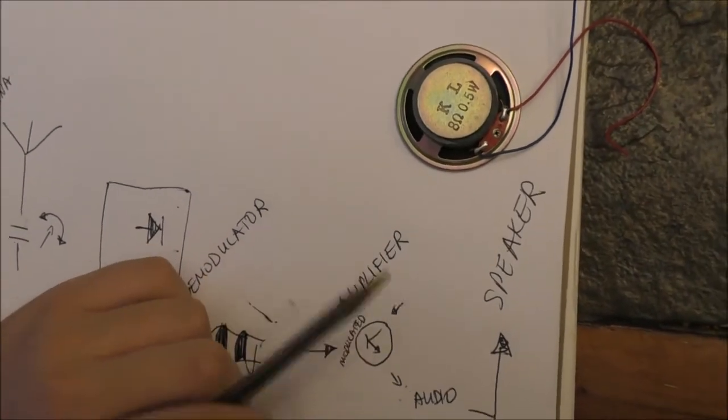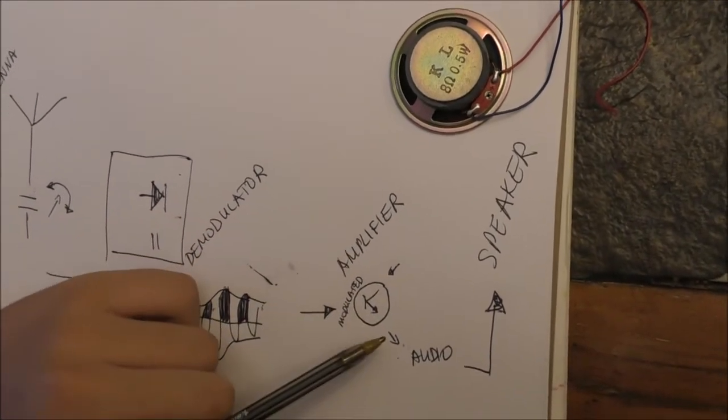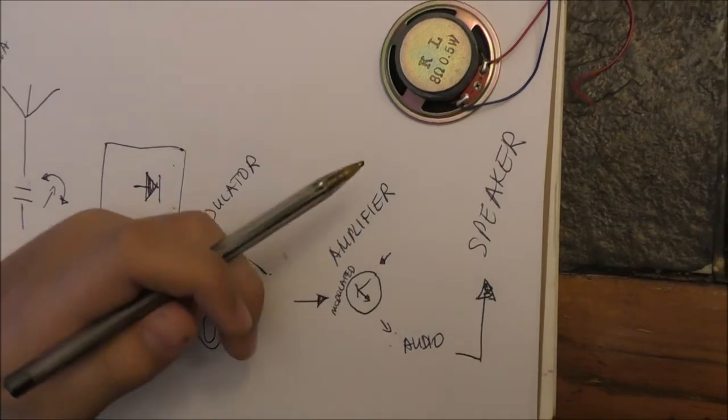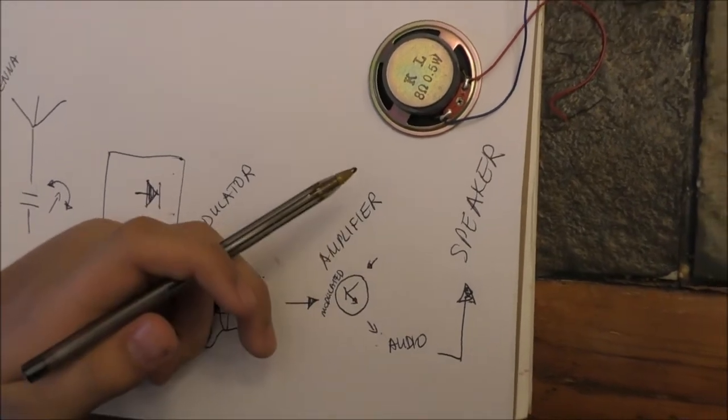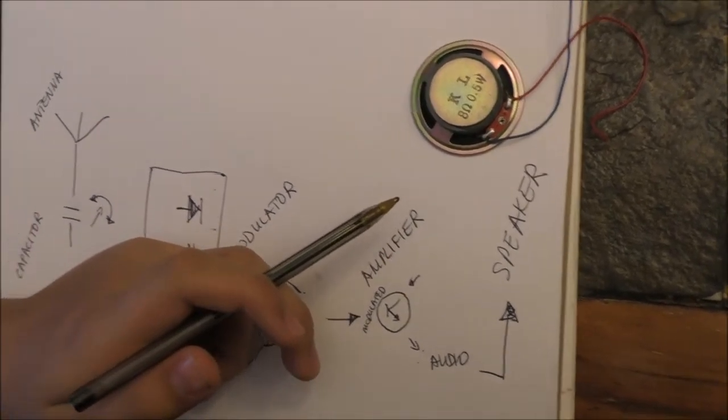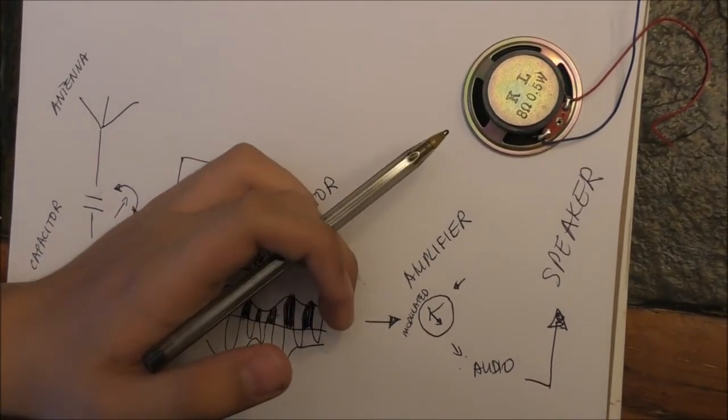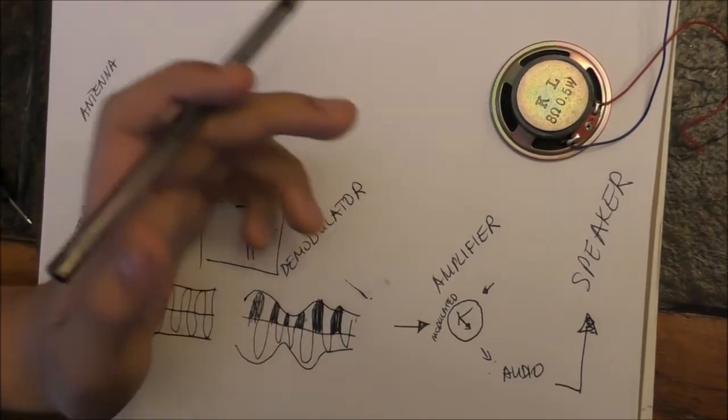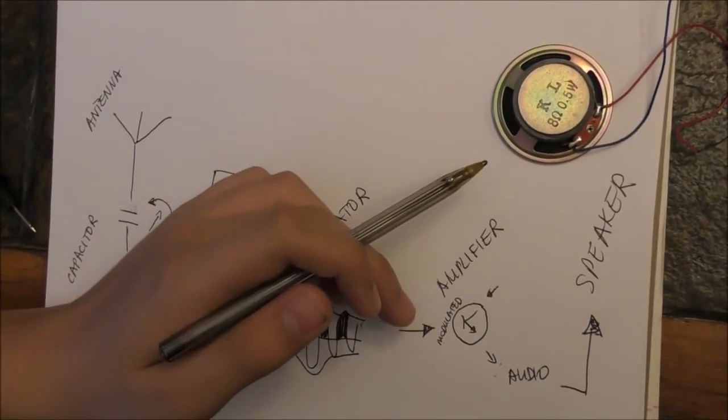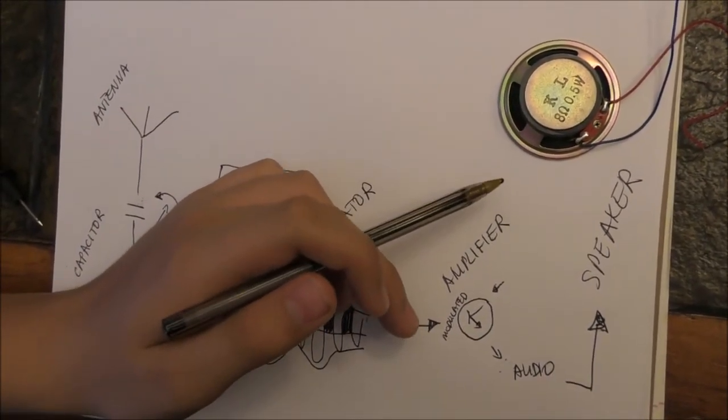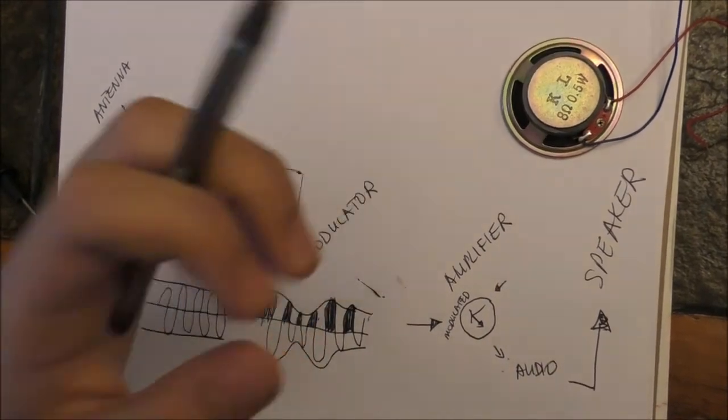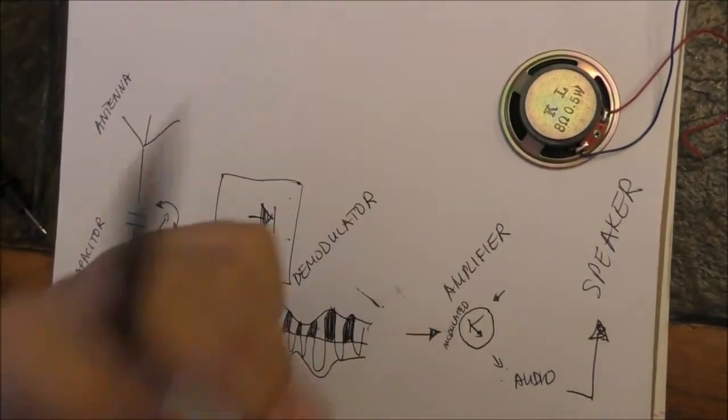Finally, after our signal goes through our amplifier, we're ready to put it through a speaker. This speaker takes our electromagnetic wave, which is now strong and modulated, and it turns it into sound waves, which we can hear through our ears. So, without further ado, let's get started with building our radio, and let's see how it works out.